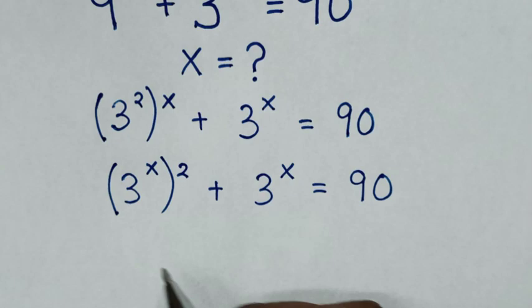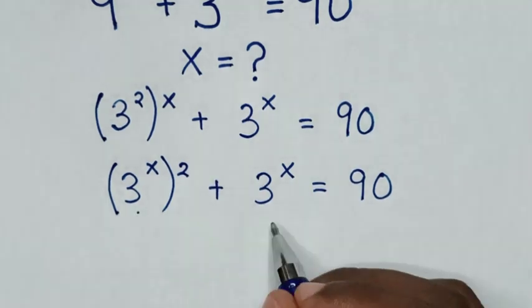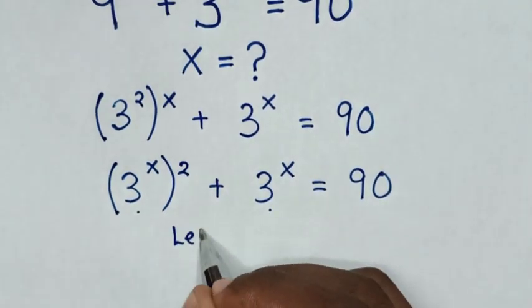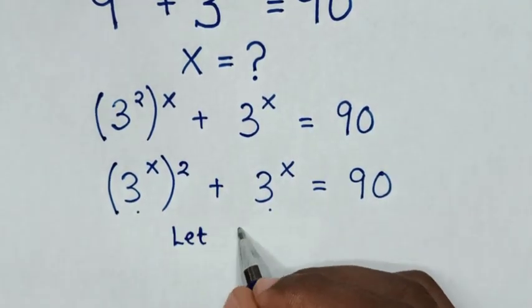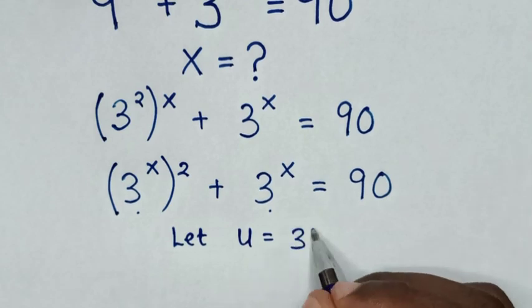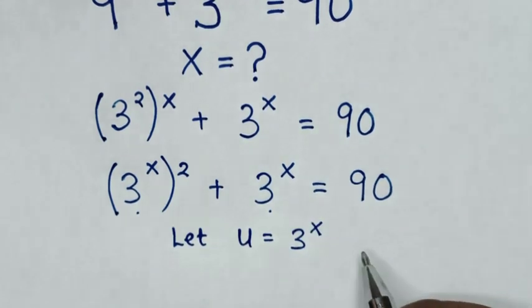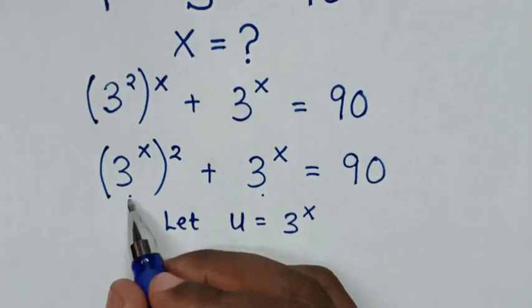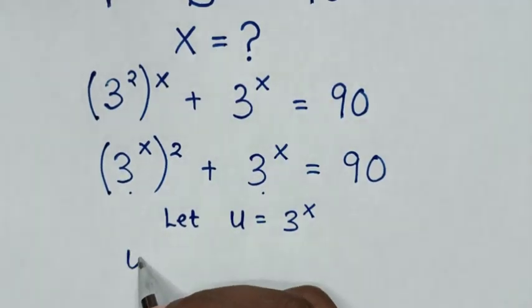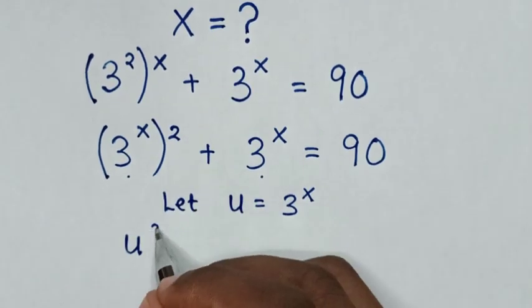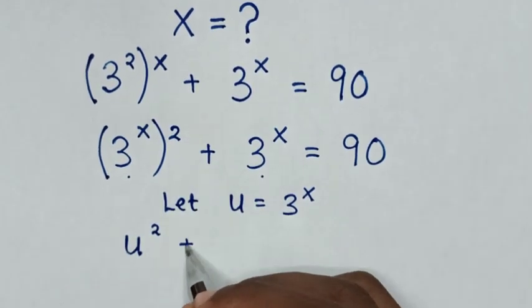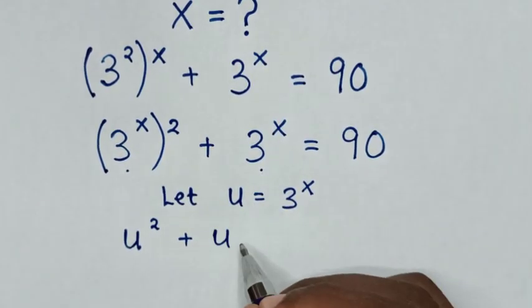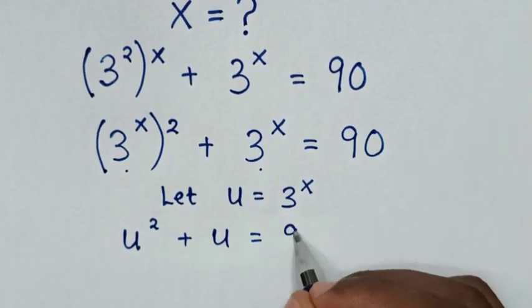From this equation, 3 power x is common, so we let u equal to 3 power x. Then we substitute u, so it will be u squared plus u is equal to 90.